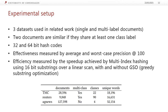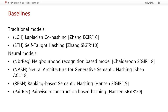We evaluate MISH on three datasets used in related work, containing both single and multi-labeled documents, where two documents are similar if they share at least one class label. We evaluate using 32 and 64 bit hash codes, measuring both effectiveness and efficiency. Effectiveness is measured by average and worst-case precision at 100, and efficiency is measured by the speedup achieved by multi-index hashing over linear scan. We compare against six baselines: two traditional methods, LXH and SGH, and four neural methods: NABOBREG, NASH, RBSH, and PAIREC.